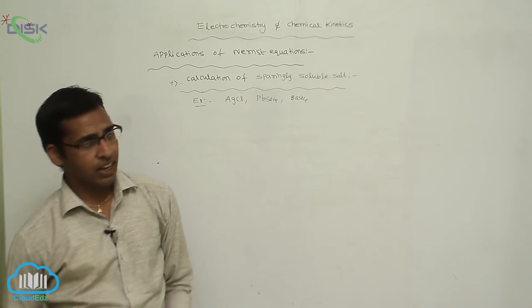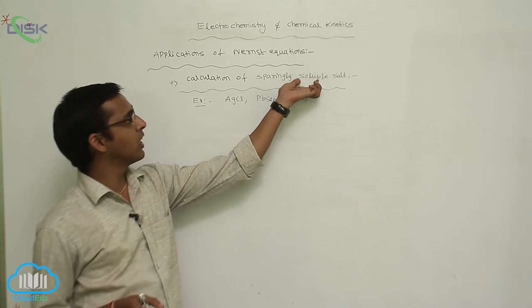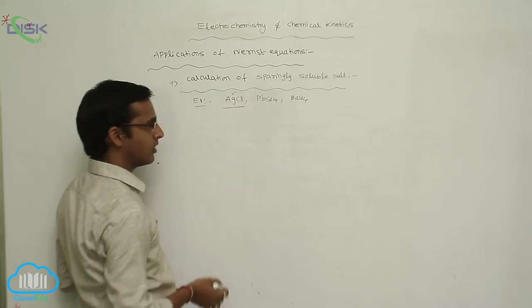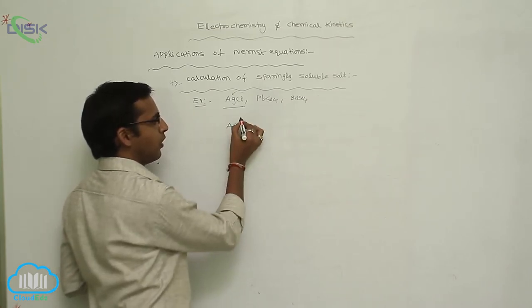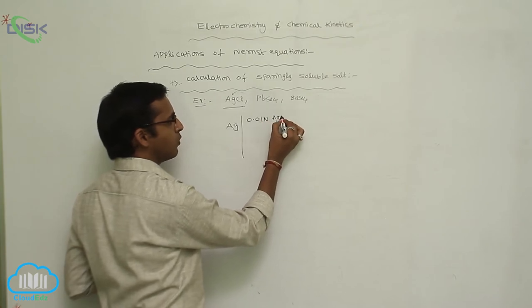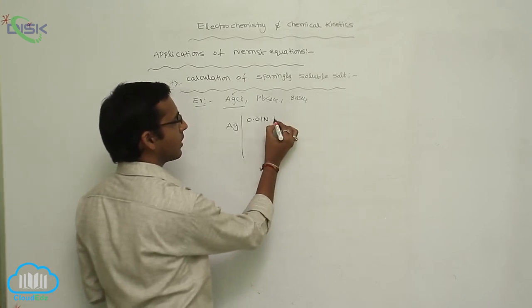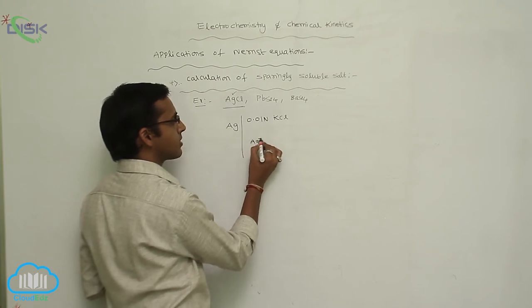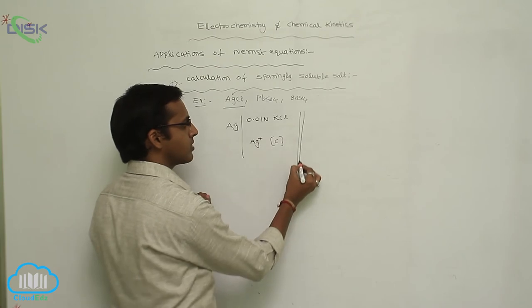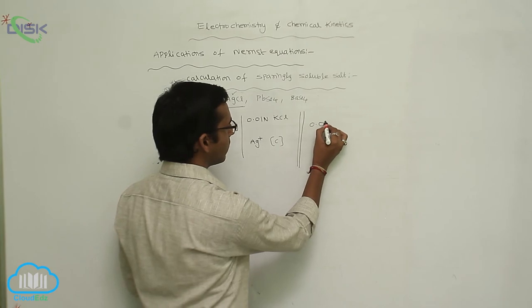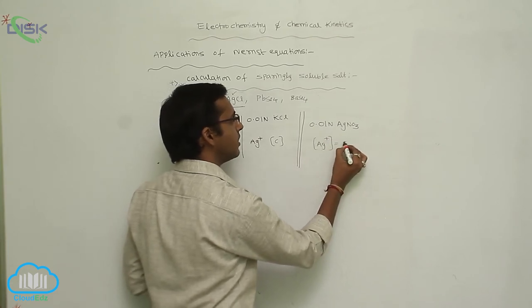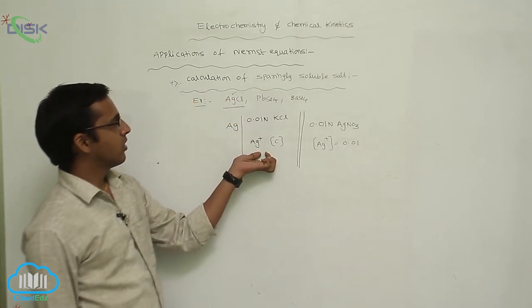The electrode potential of sparingly soluble salts is calculated with help of the Nernst equation. The cell reaction for the AgCl electrode: Ag | KCl (0.01N), Ag⁺ concentration = C ‖ AgNO₃ (0.01N), Ag⁺ concentration = 0.01. This is the cell reaction for AgCl.